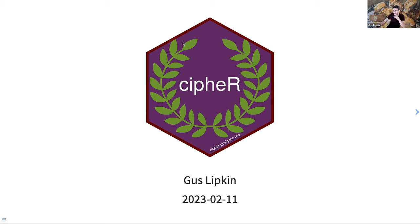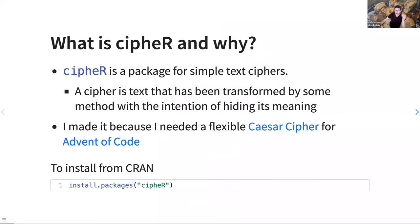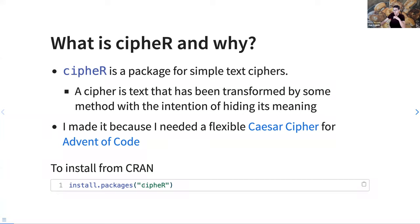This is cypher — it's supposed to evoke ideas of Romans and the classic Caesar cipher. It's a package for simple text ciphers, where you take text and perform some transformation to hide its original meaning. I made this because I needed a flexible Caesar cipher for Advent of Code, and the one existing package was very restrictive on the dictionary. If you want to install it, it's on CRAN: install.packages('cypher').